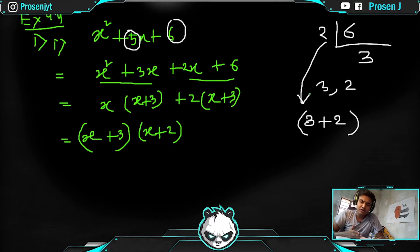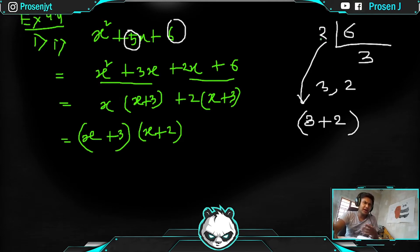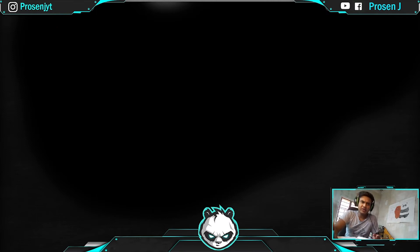So the method is: take the LCM of the third term, then find a combination using plus or minus to arrive at the middle term. Let's do one or two more examples to fully digest this idea.